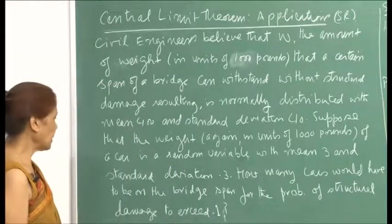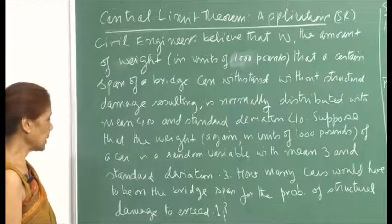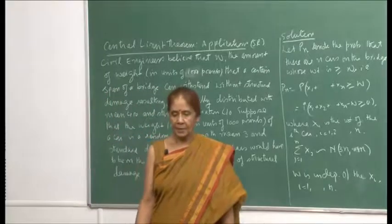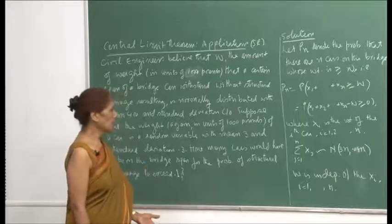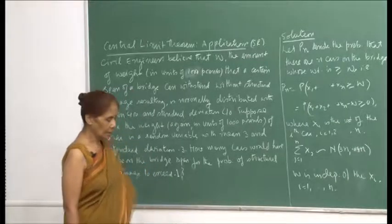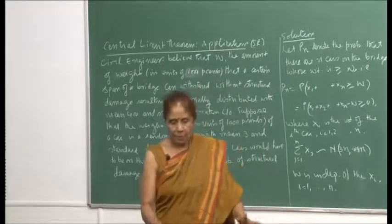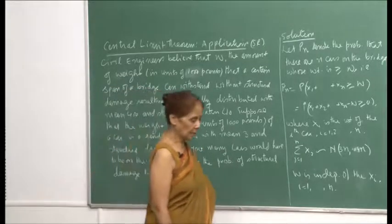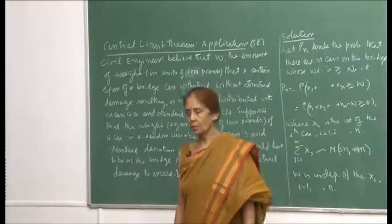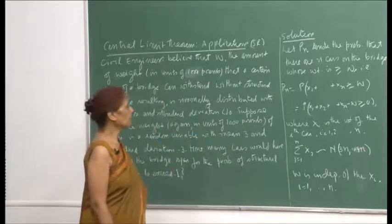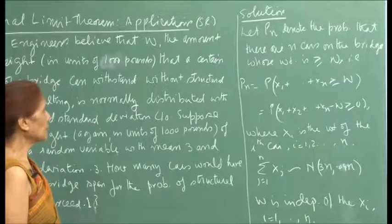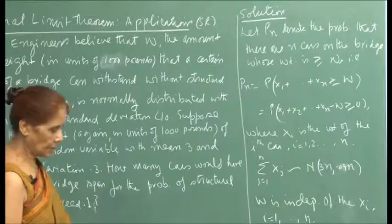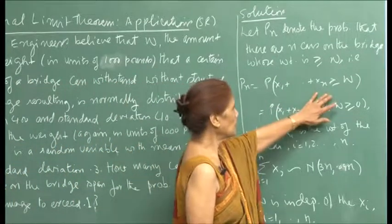How many cars would have to be on the bridge span for the probability of structural damage to exceed 0.1? At a particular time, how many cars are there such that their total weight exceeds the weight which can cause structural damage, and you want the probability of this event to be more than 0.1. We begin by defining p_n as the probability that there are n cars on the bridge whose total weight exceeds w, where exceeding w is the condition for structural damage.